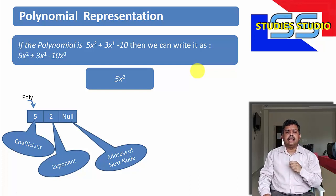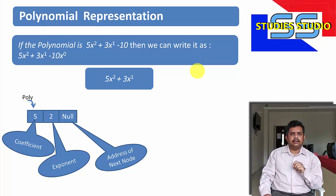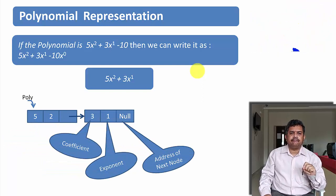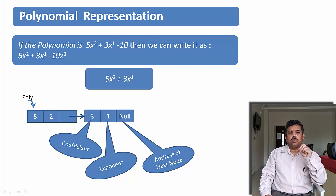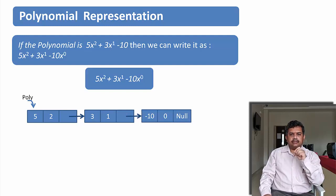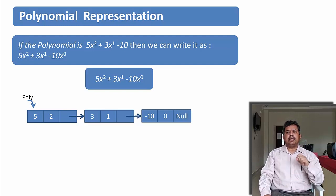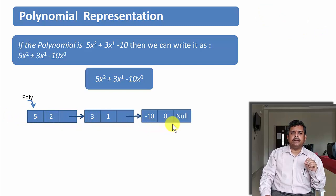If I want to represent 5x squared plus 3x to the power 1, I can write it in the same fashion, but in the first node I have to write the address of the second node. In the second node, 3 is the coefficient and 1 is the exponent of the term 3x to the power 1. Similarly, the last term is minus 10x to the power 0 — I write 10 as the coefficient, 0 as its exponent, and null, since there are no more terms in this polynomial.